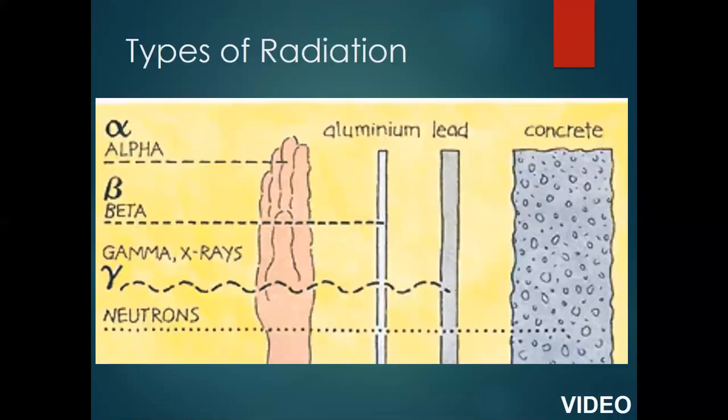Radiation. Here are the basic types: alpha, beta, gamma, x-rays, and neutrons. Neutron radiation is the one you saw in the nuclear power plant, and it is the strongest form of radiation on this list. I want you to look at the penetrating power of each type — it's going to be important that concrete stops neutron radiation when we look at the actual setup of our nuclear reactors.